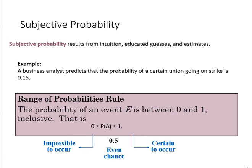Subjective probability is less mathematical. This has to do with intuition, educated guesses, and estimates. Hopefully, if somebody is an expert, their subjective probability would perhaps be somewhat accurate, and that means it would approach the theoretical probability.